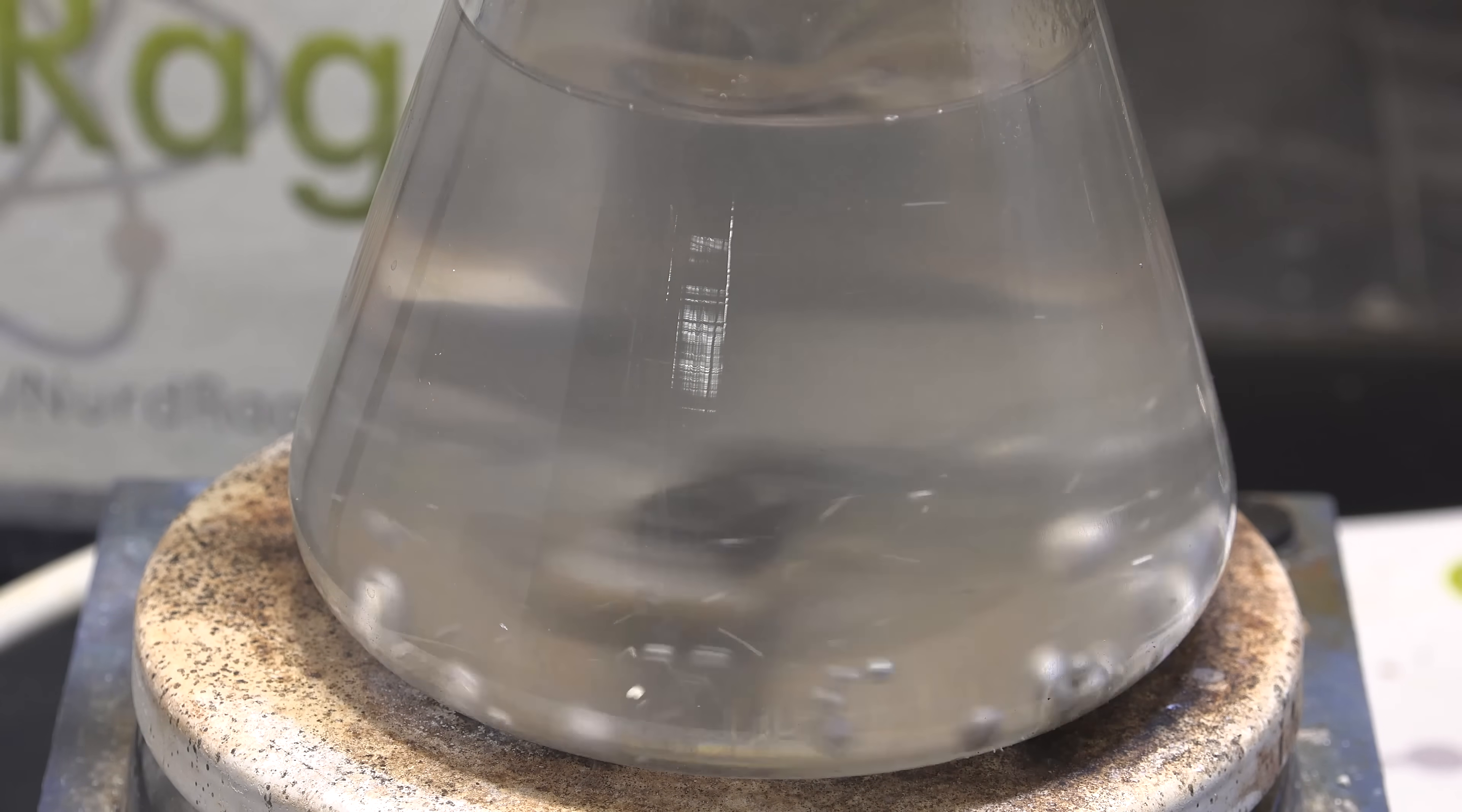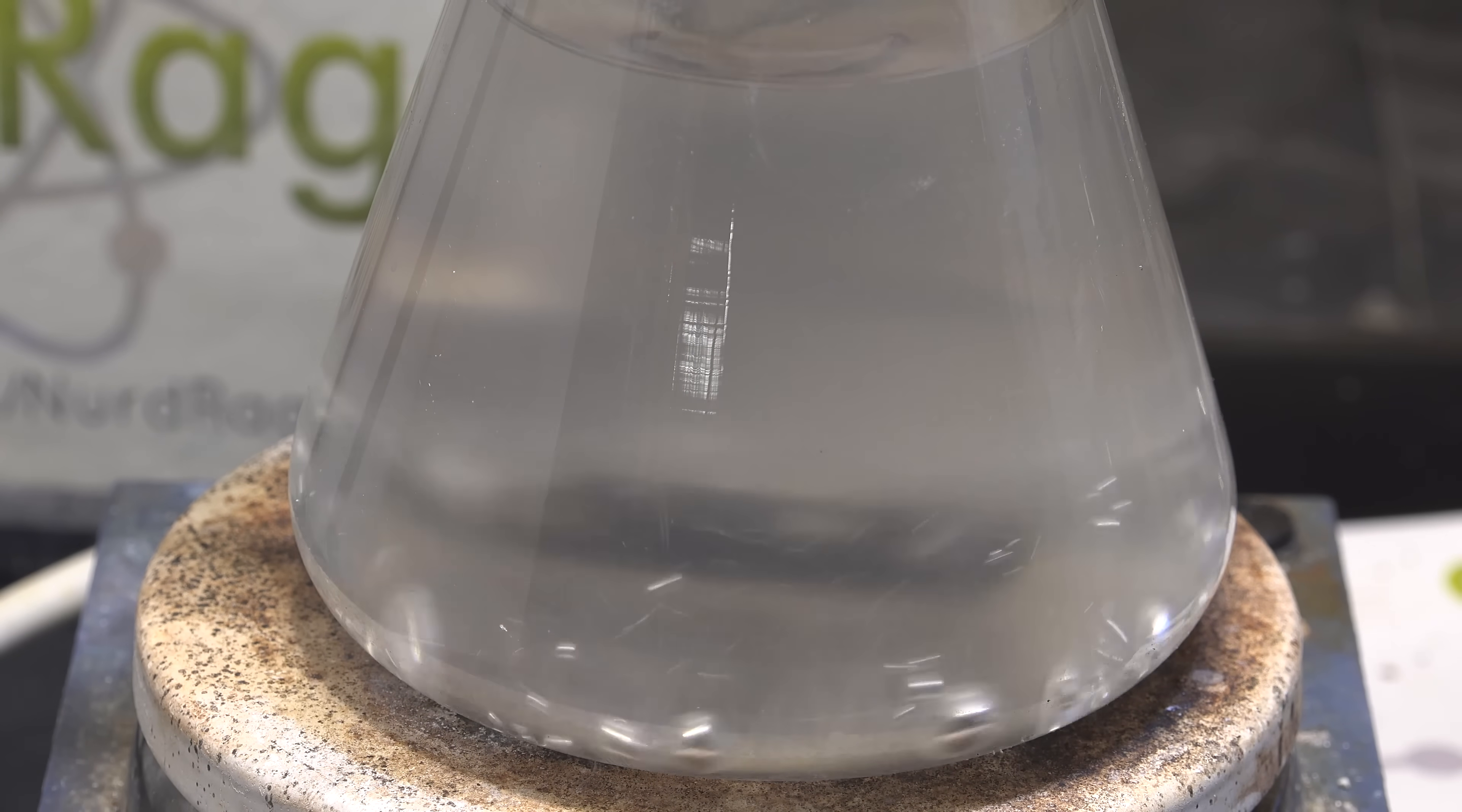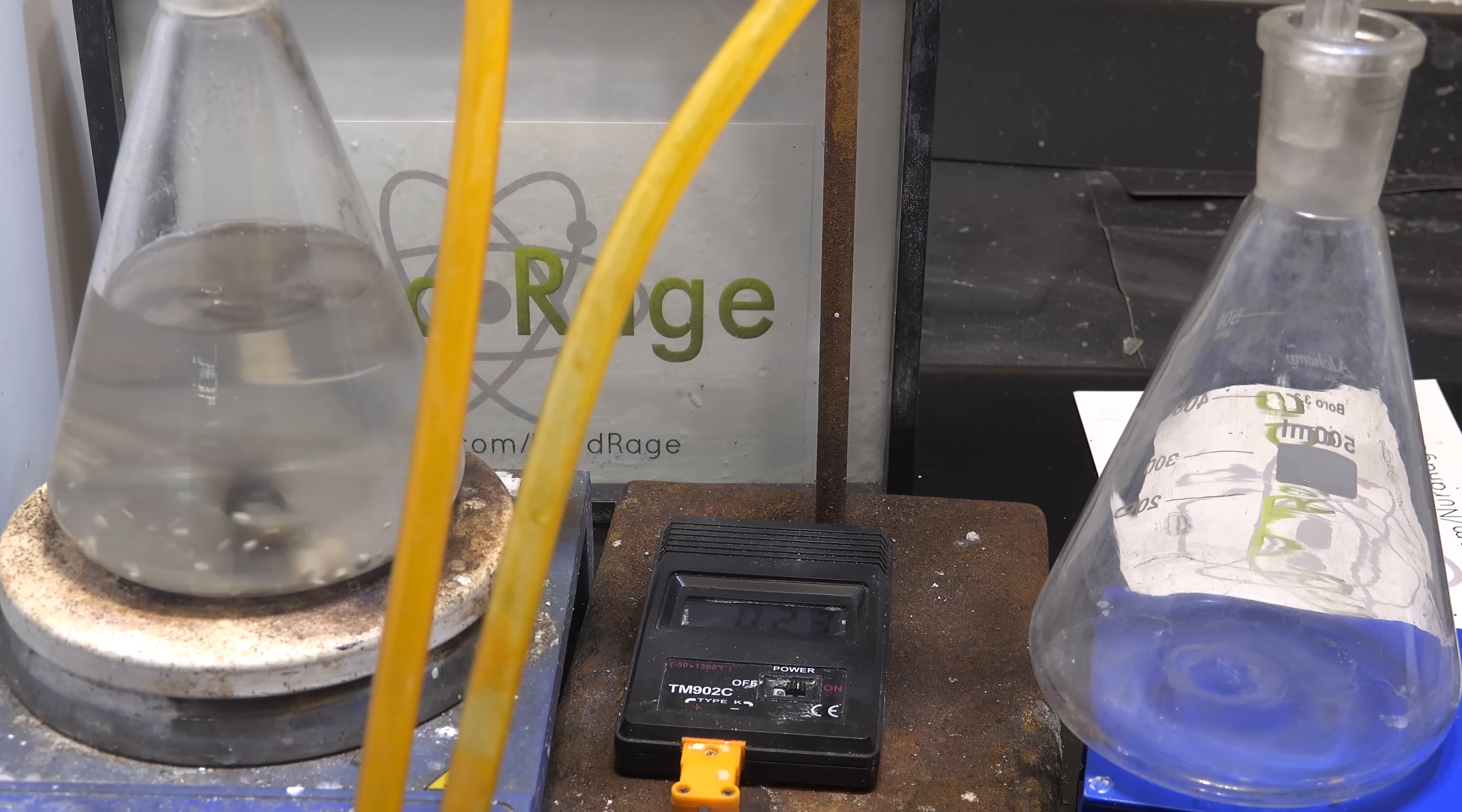This destroys any moisture in the xylene and reactive impurities. Trimethyl orthoformate is water sensitive so we want to reduce that as much as possible. Once that's done we let it cool and then rearrange our apparatus for distillation. We distill off our xylene and save it for later use.